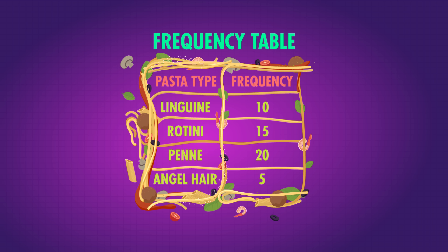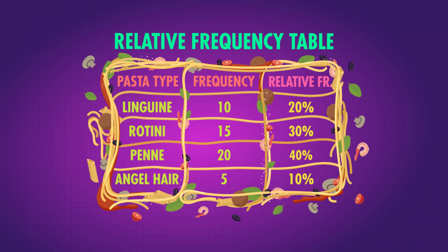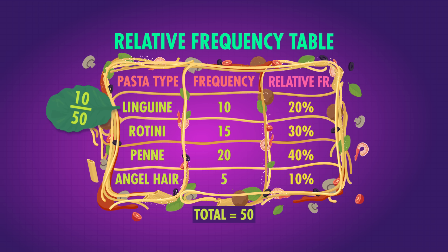The simplest way to display categorical data is to make a frequency table. A frequency table shows you all the categories and all the numbers of data points that fall in that category — in other words, its frequency. To change a frequency table into a relative frequency table, we just need to take each raw frequency and divide by the number of total points to get a decimal between zero and one. Some of you may be used to reading decimals as percentages, but if you're not, just multiply by 100 to get the percentage. For linguine, we have 10 divided by 50, which is 0.2, or 20% of the group.